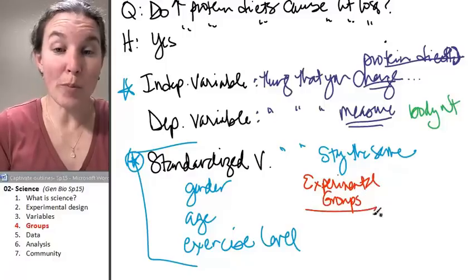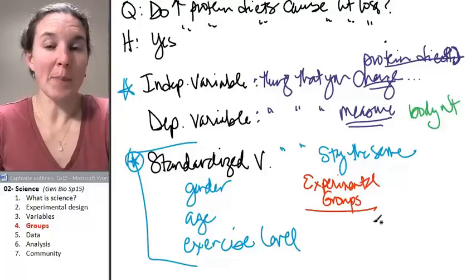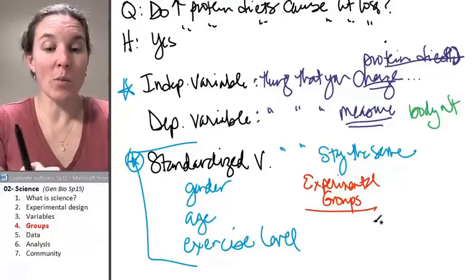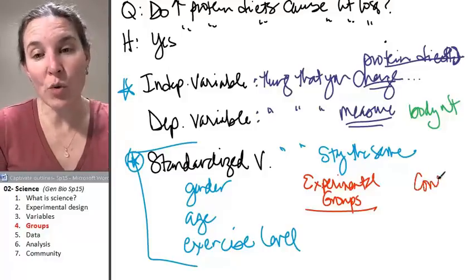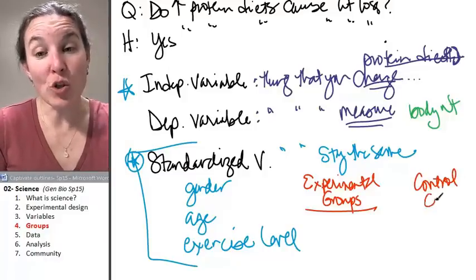And this is a group of subjects that receive treatment in some way, shape, or form. And then you have a control group. And the control group does not receive treatment.